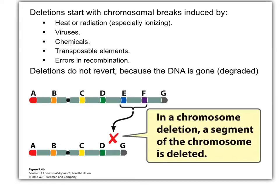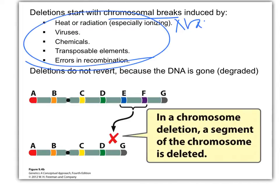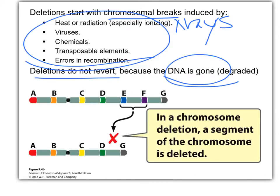Deletions always start with some sort of chromosomal break, usually caused by something in the environment such as x-rays — ionizing radiation. Deletions can never revert; they can't come back because we actually lose the DNA. How would that look? If we mapped out chromosomes, we're missing this part — it's gone, deleted. Simple as that.